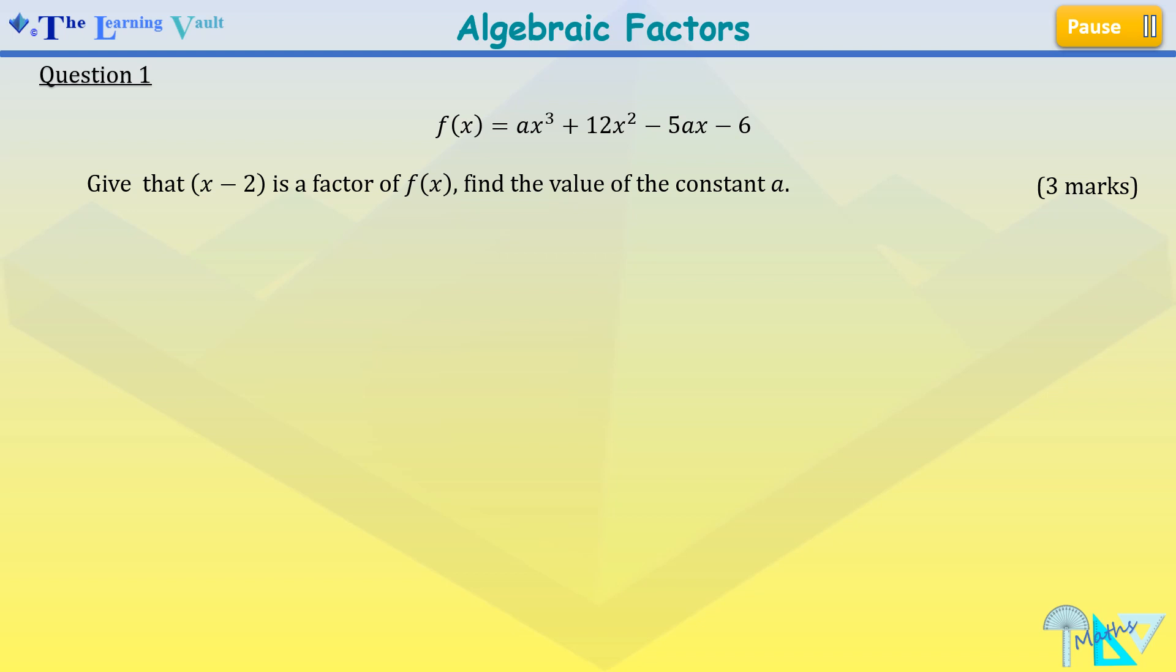Now let's see how we answer this question to gain the full 3 marks. Now we've been given that x minus 2 is a factor of the function given. So therefore we know if we substitute x equals to 2 into the function, it should be equal to 0. Therefore it enables us to find the value of the constant a.